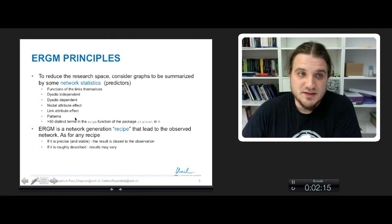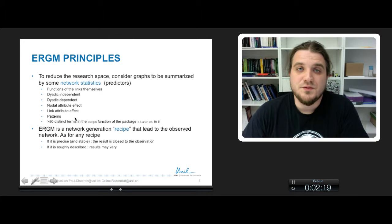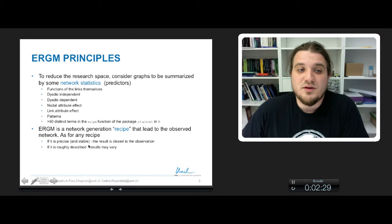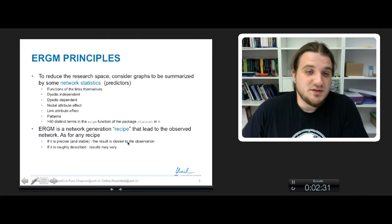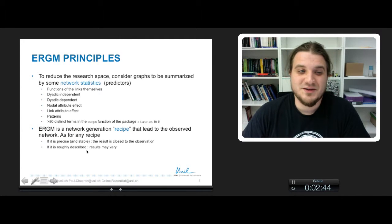To simplify, you can see ERGM as a network generation recipe. And if you follow this recipe, it may lead you to the observed network. But as for any recipe when you cook, if the recipe is precise and stable, the result is close to the observation. But if the result is roughly described, the result you have may vary from the observation that you have on the cover of the book of cooking.